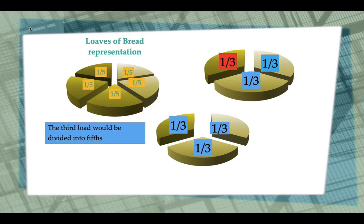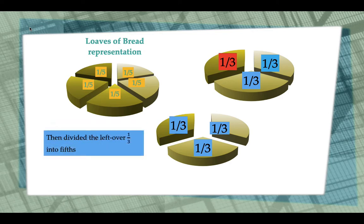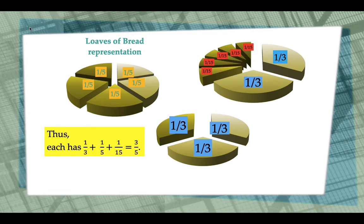Then, divide the left over 1/3 into fifths. So, each person gets 1/15. Thus, each has 1/3 plus 1/5 plus 1/15 which is equal to 3/5.